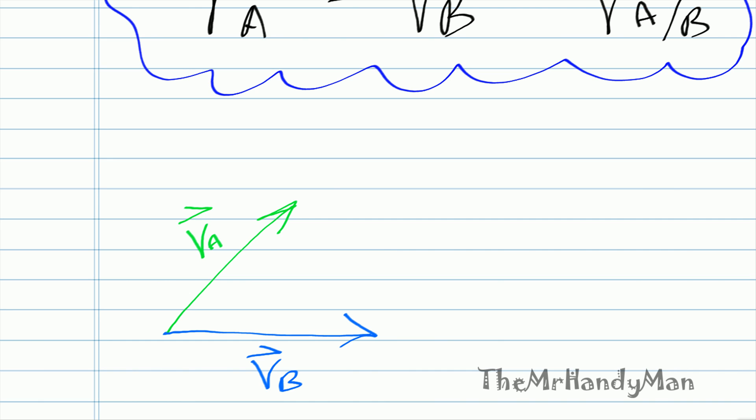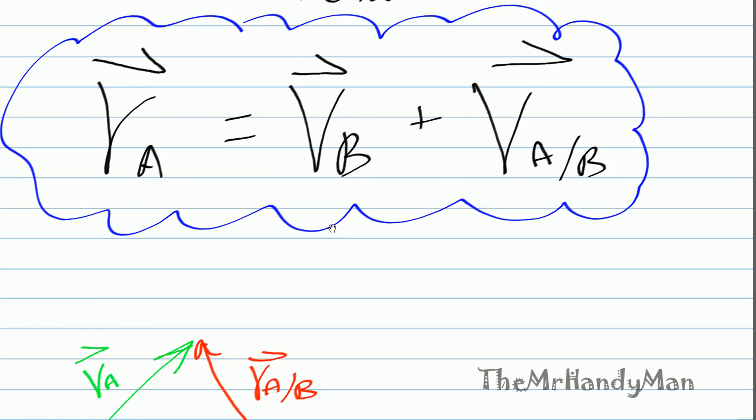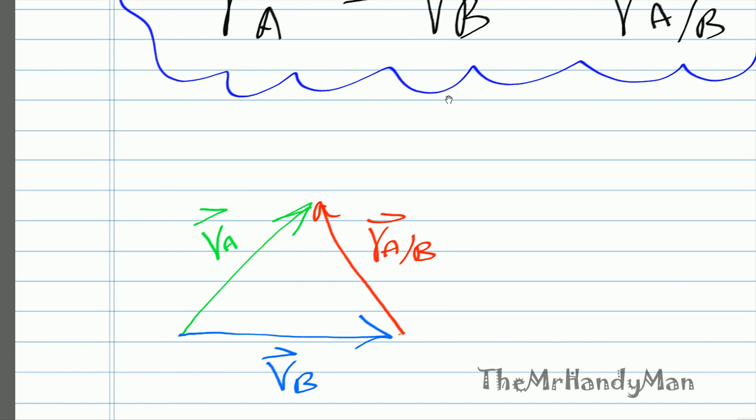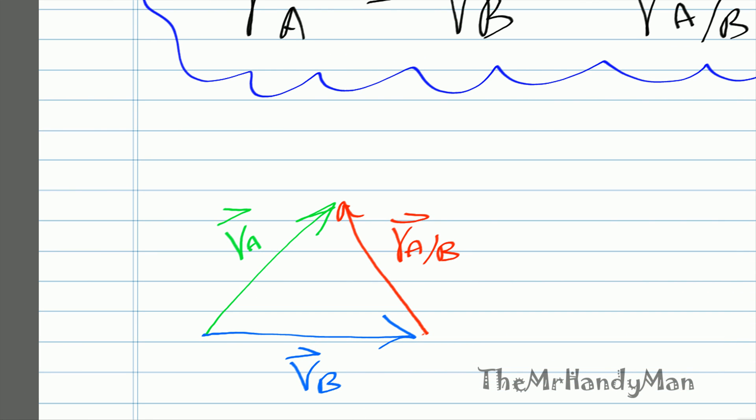And then you would have V A relative to B. And what that looks like is right here. V A relative to B. That's a vector. So as you can see, if you were to add them up, you can see how this equation up here makes sense. V A, which is right here, you can see how the addition of V B and V A relative to B gets to the same point from the origin. So that's the key concept. That's what it looks like graphically.